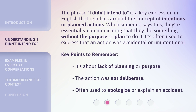The phrase 'I didn't intend to' is a key expression in English that revolves around the concept of intentions or planned actions. When someone says this, they're essentially communicating that they did something without the purpose or plan to do it. It's often used to express that an action was accidental or unintentional. Key points to remember: it's about lack of planning or purpose, the action was not deliberate, and it's often used to apologize or explain an accident.